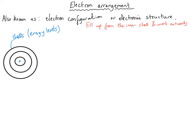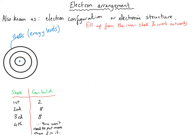How many electrons can each shell hold? The first shell can hold two electrons, and then it's full. The second shell can hold eight electrons, and then it's full. The third shell can also hold eight electrons. It gets more complicated after that, but for GCSE level you'll only have to go up to 20 electrons, which means you'll only need to go up to the fourth electron shell.